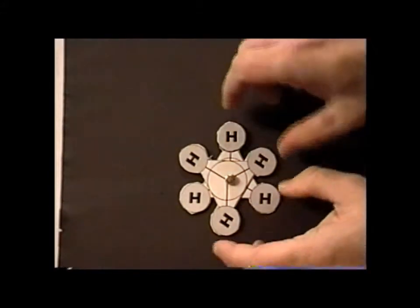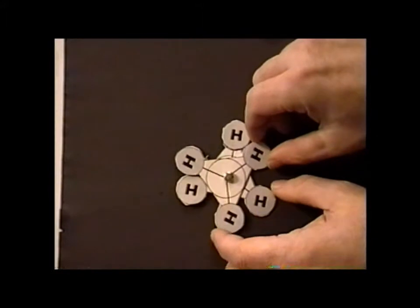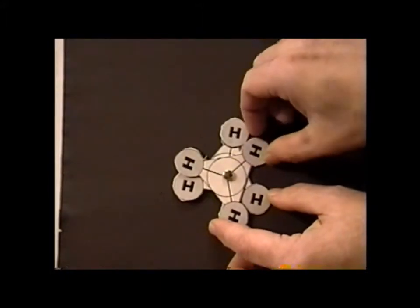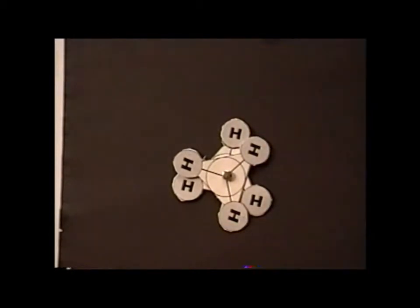Any other arrangement, for example, if we arrange them this way, where they are neither eclipsed nor staggered, we call a skew conformation.